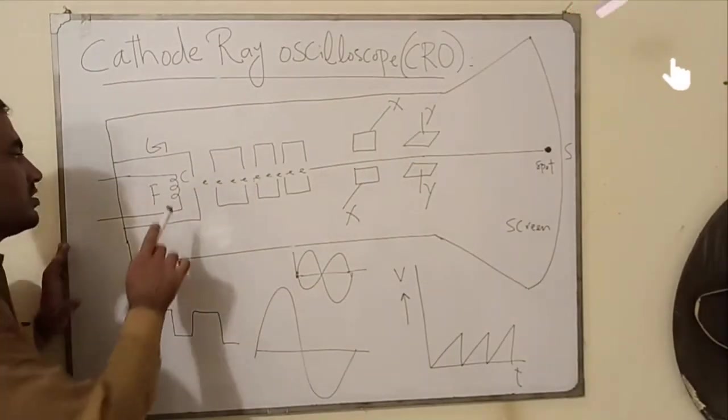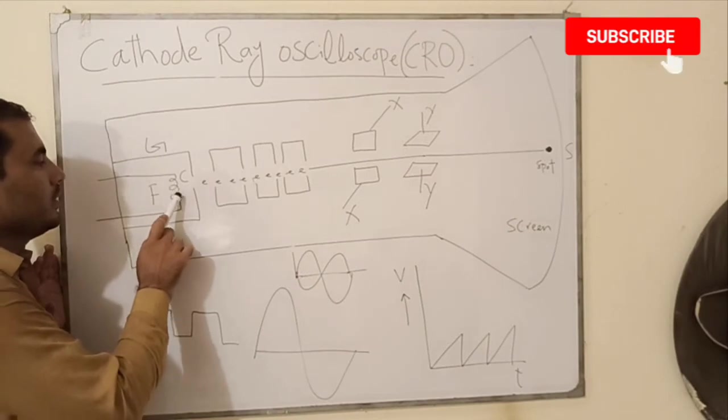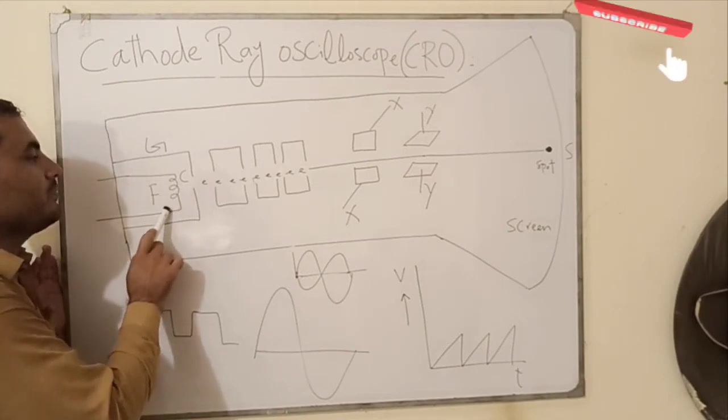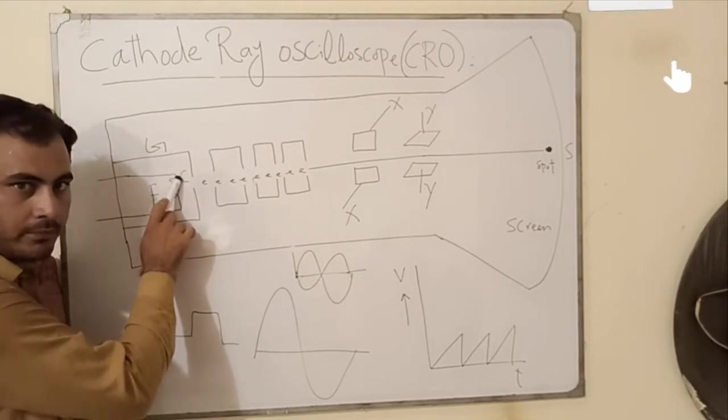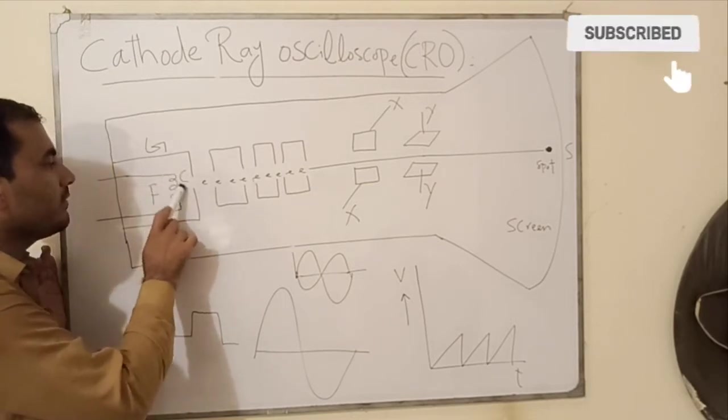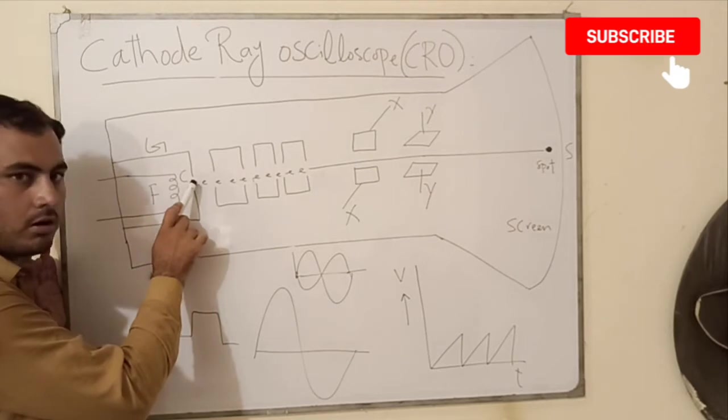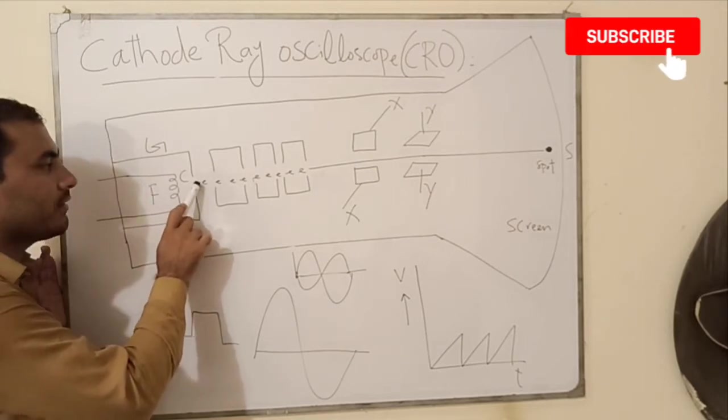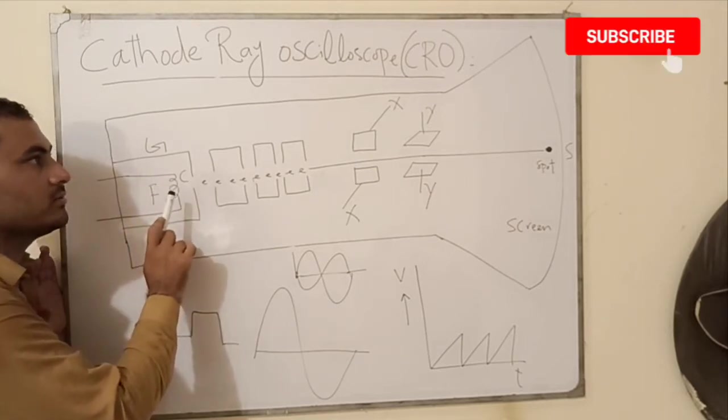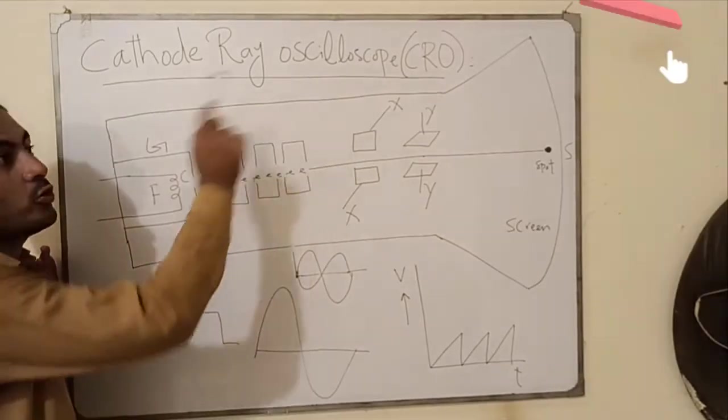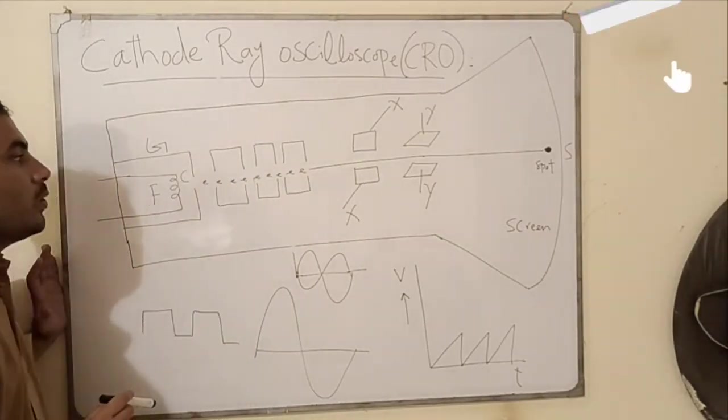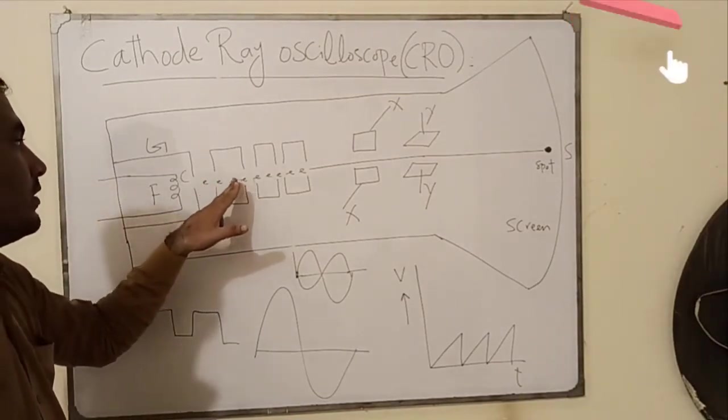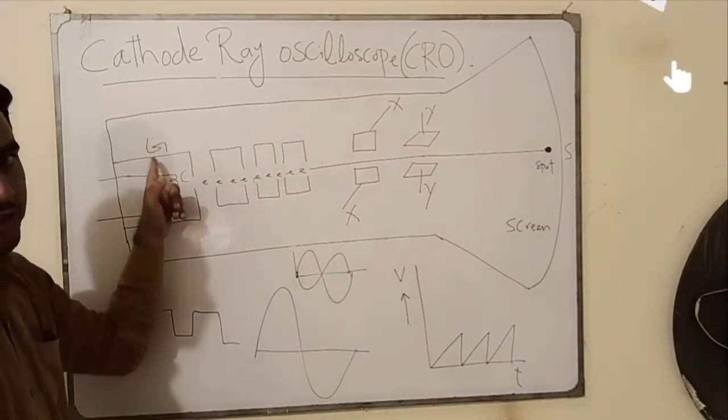Cathode Ray Oscilloscope consists of filament which basically indirectly heats this cathode. Whenever we heat up this element it emits electrons and these electrons are negatively charged particles. That's why it is called Cathode Ray Oscilloscope, because here cathode rays are emitted. Now how we can control these electrons with the help of grid G.